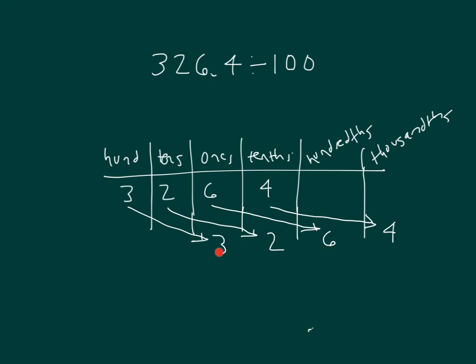So the 3 got shifted, the 2 got shifted. And so our number is 3.264. Also read as 3 and 264 thousandths.